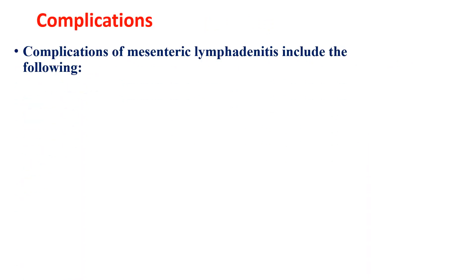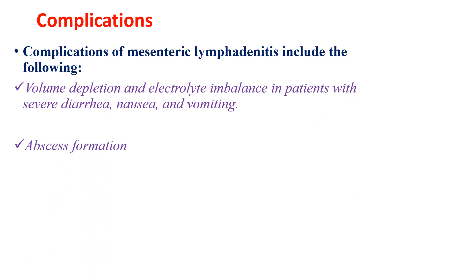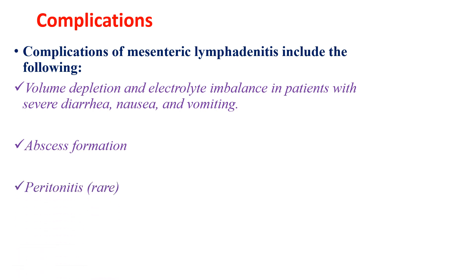Complications of mesenteric lymphadenitis include volume depletion and electrolyte imbalance in patients with diarrhea, nausea, and vomiting, abscess formation, and rarely peritonitis and sepsis.